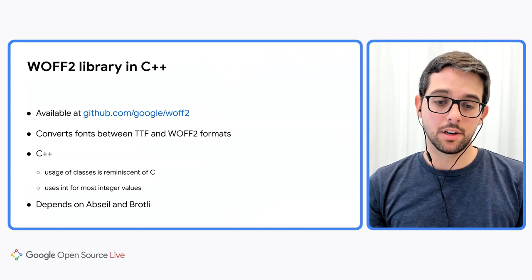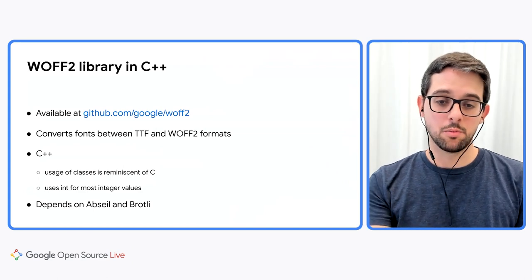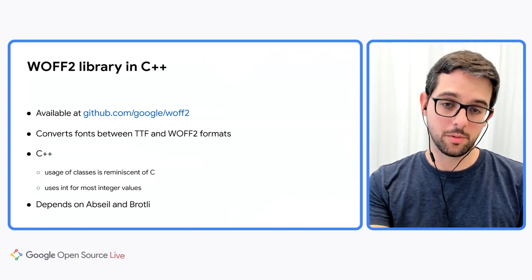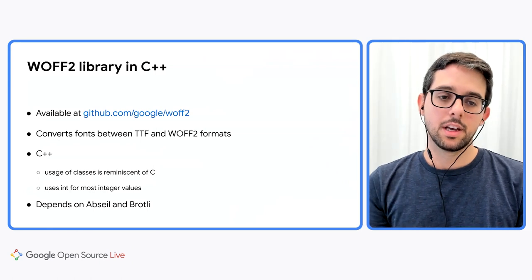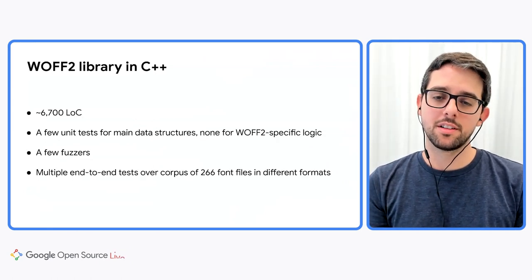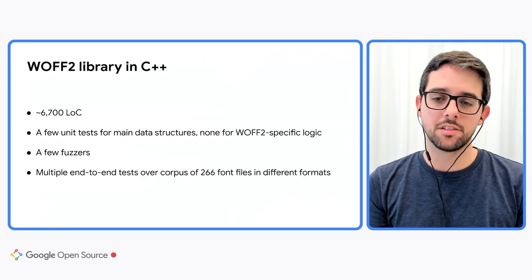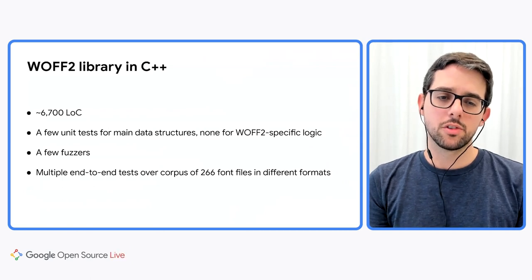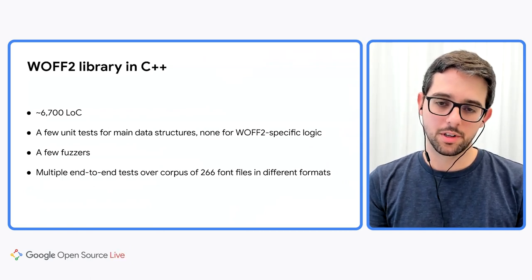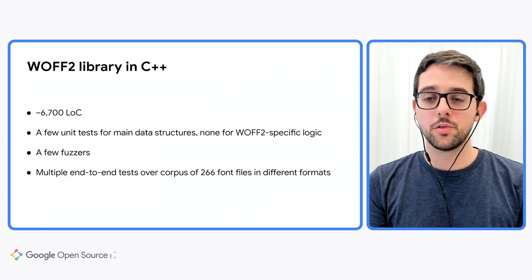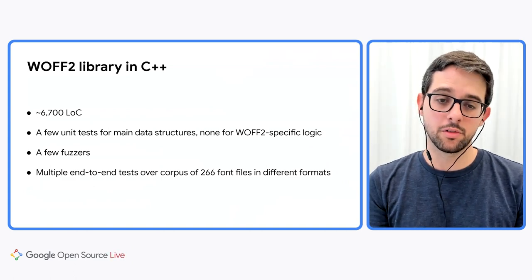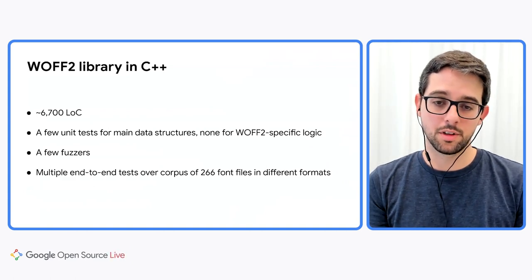The library depends on Apseo and Brotli, which is a C library used to compress and decompress. One of the reasons why this library was chosen is that it contains about 6,700 lines of code, which should be possible for a single person to port. This included a few unit tests, a few fuzzers, and multiple end-to-end tests over a big corpus of font files.